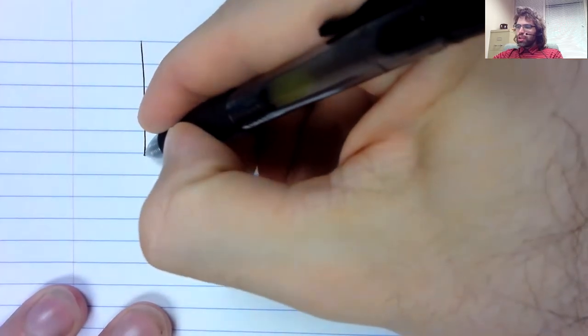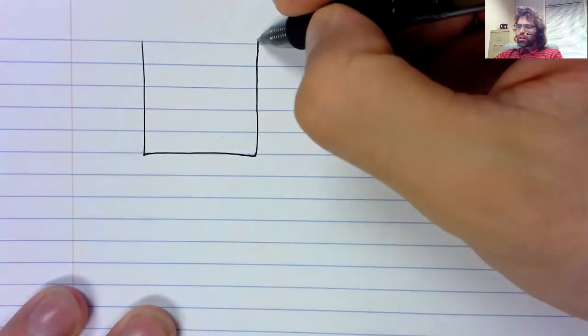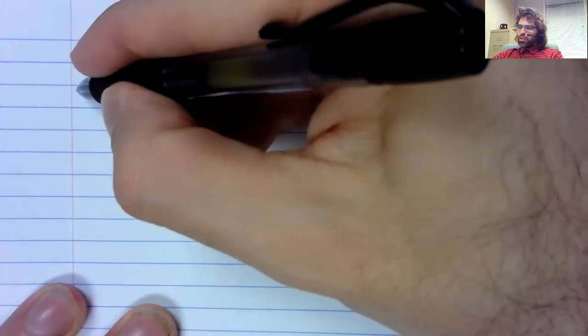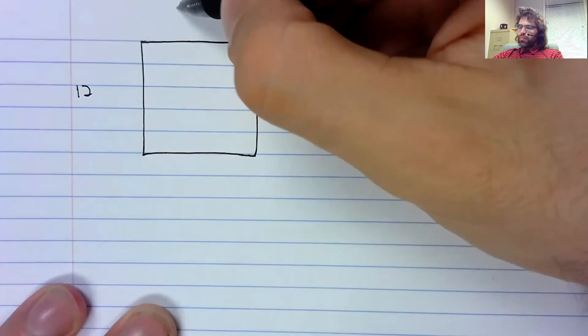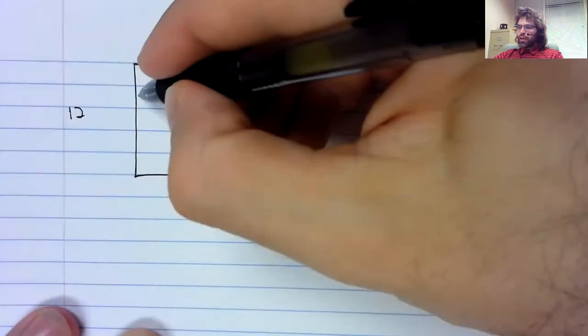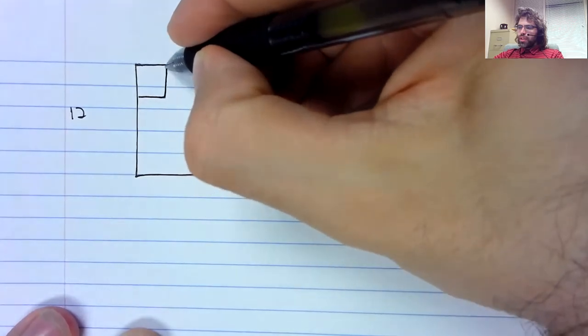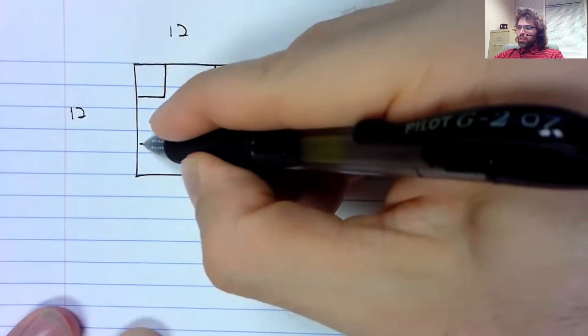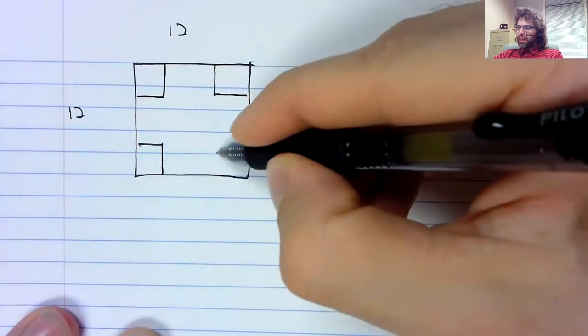So here, I think a picture is going to be useful. It will help clarify what's going on. We have this 12 by 12 inch square. And we are cutting the corners out.